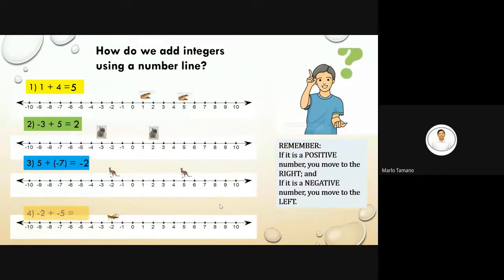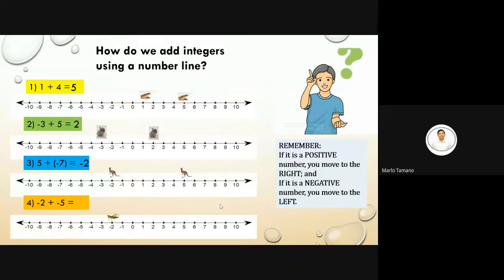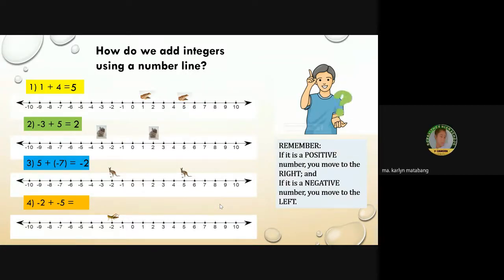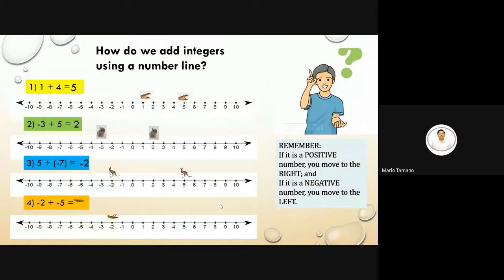Next: negative two plus negative five. What do you think the answer is? Both are negative. Negative seven. That is correct.